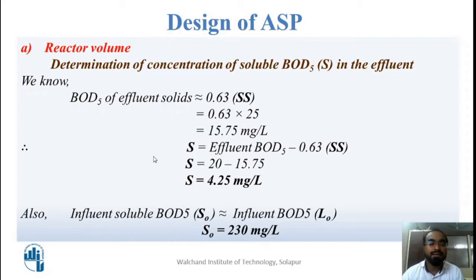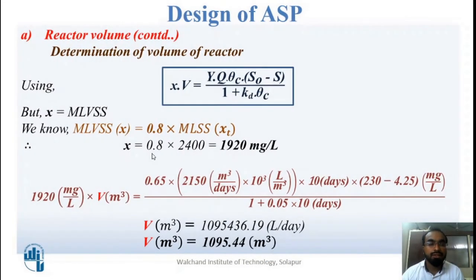The influent soluble BOD is equivalent to influent BOD5, so S0 = 230 mg/L. We use the formula: X·V = Y·Q·θC·(S0 − S) / (1 + KD·θC), by which we can get the volume of the reactor.